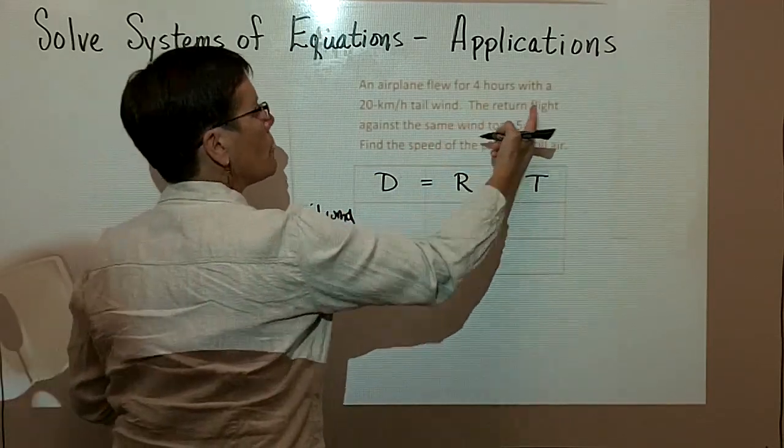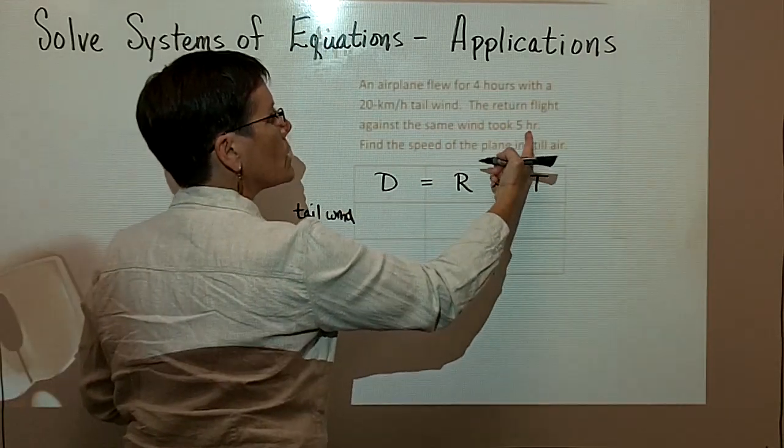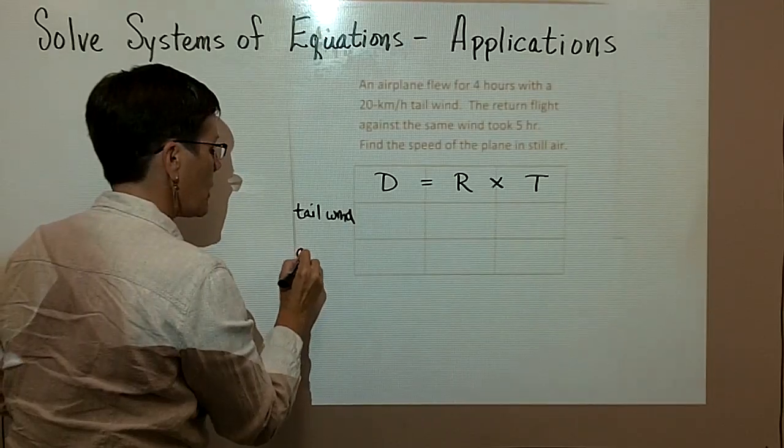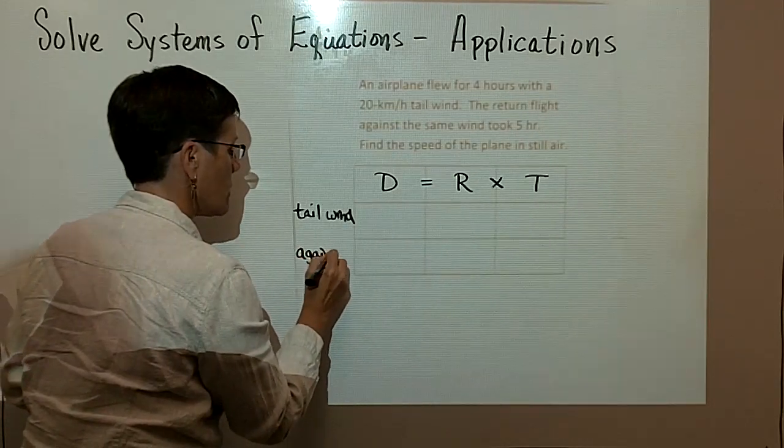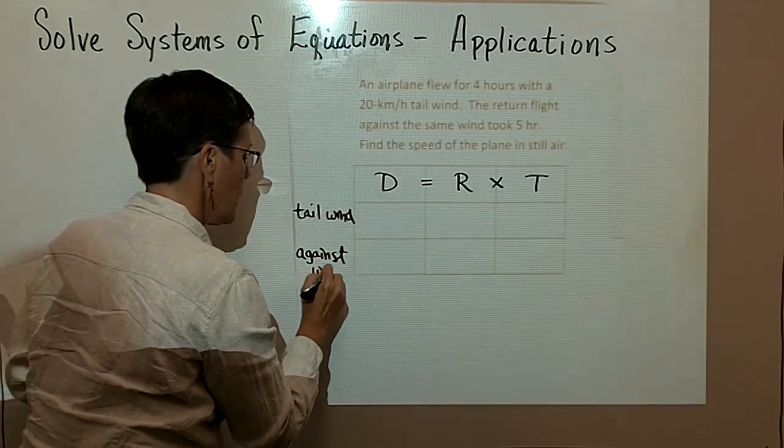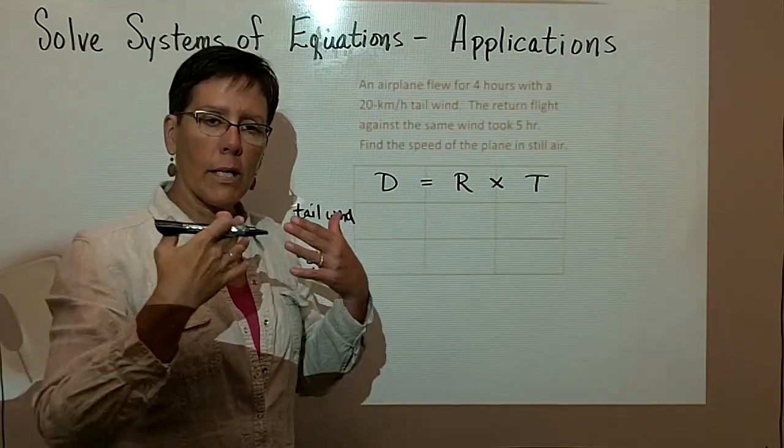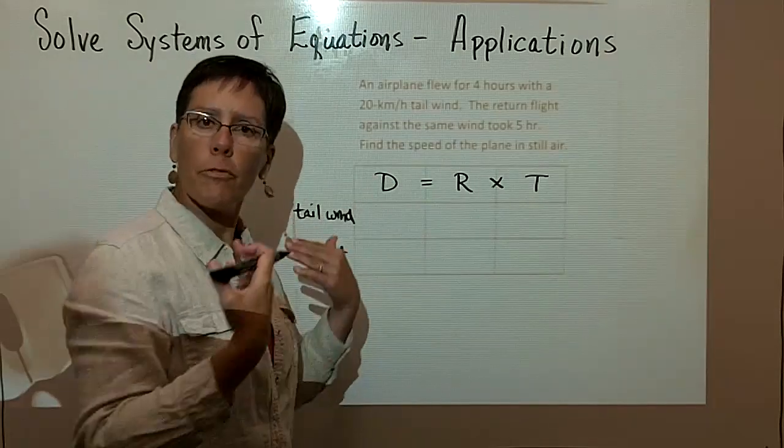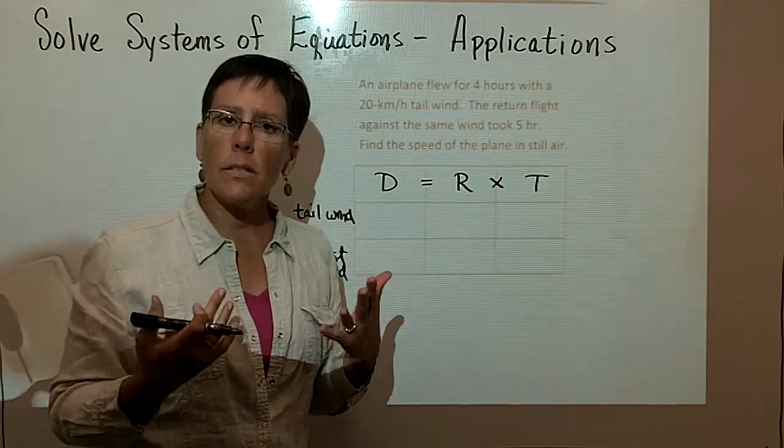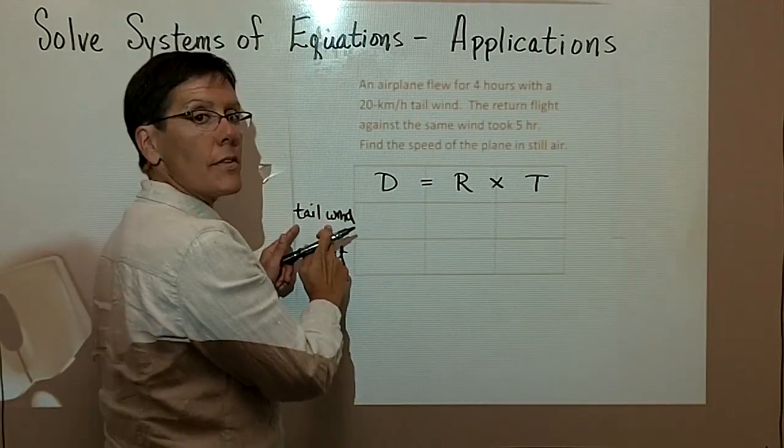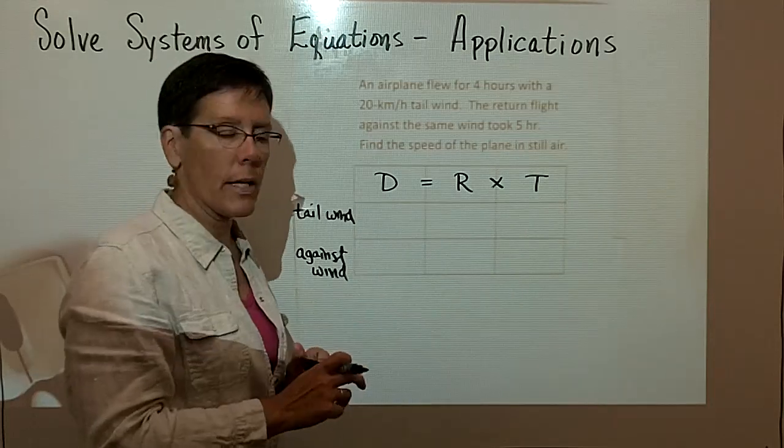The return flight against the same wind took 5 hours. So let's just put here against the wind in the second row. The one thing we know about this is that we got in the plane, we flew somewhere, and we flew back. And so the distance going with the tail wind and against the wind are the same.